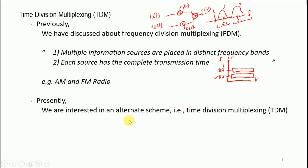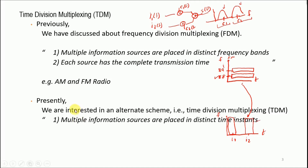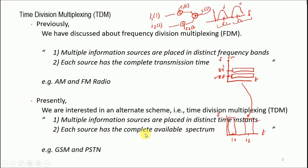We are now interested in the alternate scheme: time division multiplexing. Re-plotting time versus frequency, we segregate messages i1 and i2 with respect to time. i1 is available for a given instant of time but the whole channel is accessible to it. Similarly, i2 is available for a specific time duration but again the full frequency channel is available to it. Multiple information sources are placed in distinct time instances, and each source has the complete available spectrum.